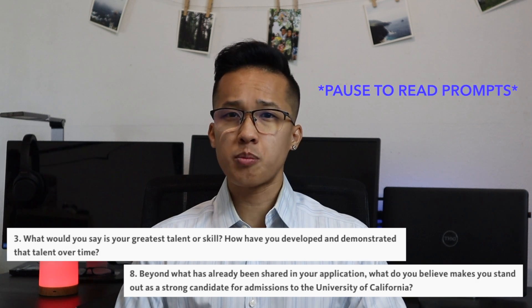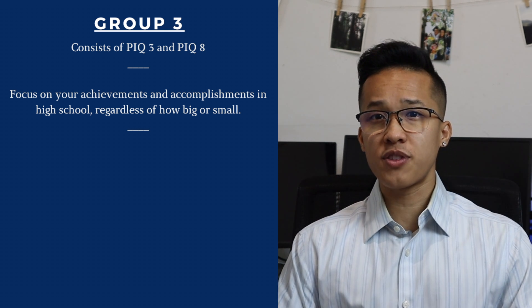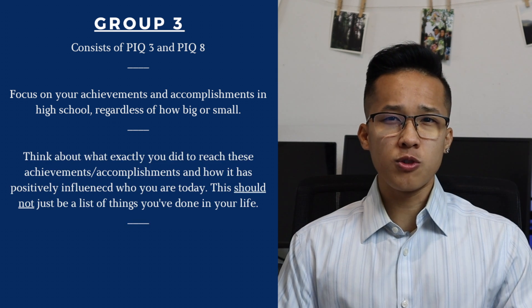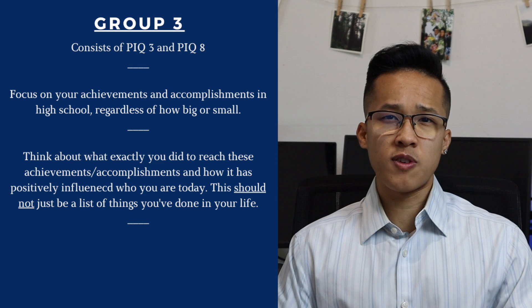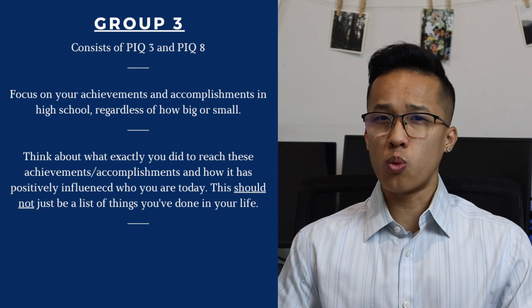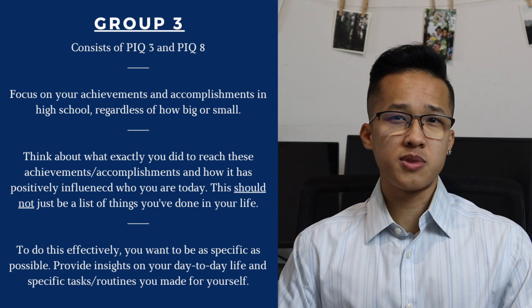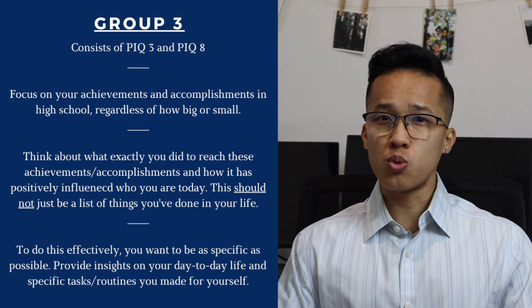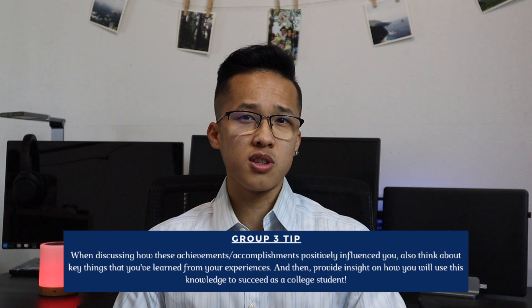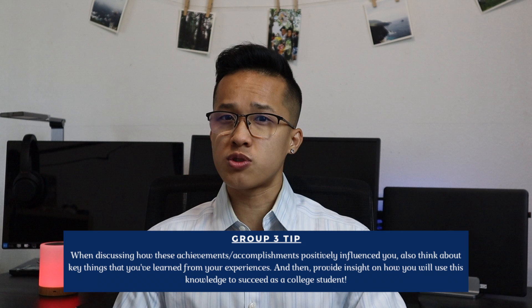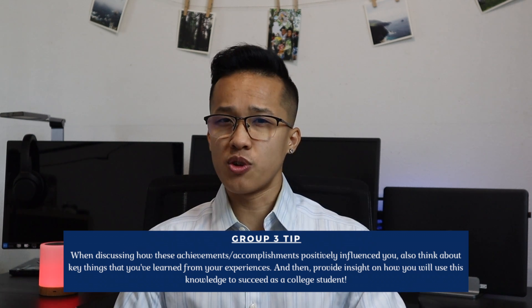Group three includes PIQ number three and PIQ number eight. They really focus on the achievements or accomplishments that you've had in your life thus far, regardless of how big or small. You don't want to just provide a long list of achievements — you want to choose a couple and talk about what you did exactly to accomplish them and how they've positively influenced you today. For these two PIQs, you want to be as specific as possible — talk about day-to-day, week-to-week, or month-to-month things that helped you get there. Also talk about the skills and lessons you learned and how exactly you're going to use them when you're in college. For example, if you took five AP exams your sophomore year while balancing basketball practice, talk about how you learned time management and how this will be useful on a UC campus.